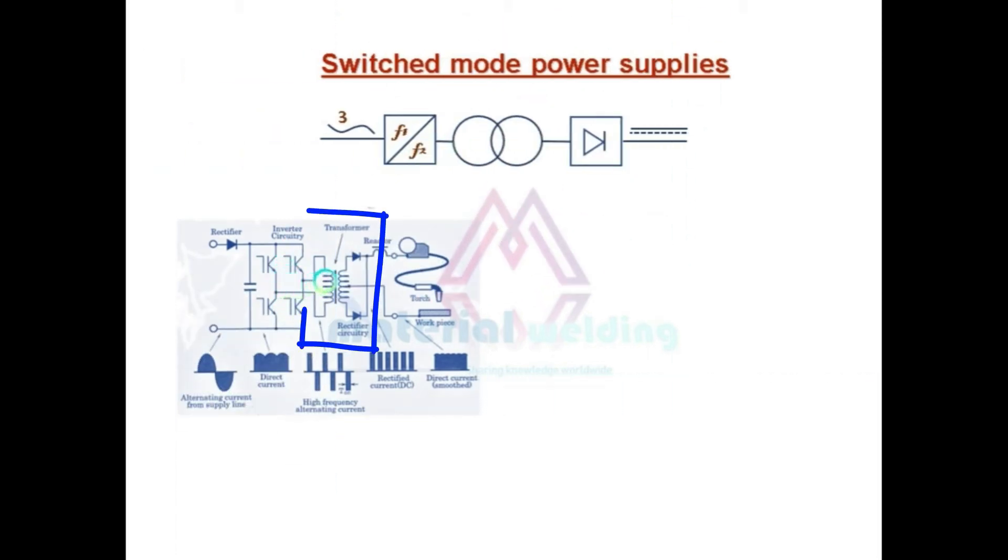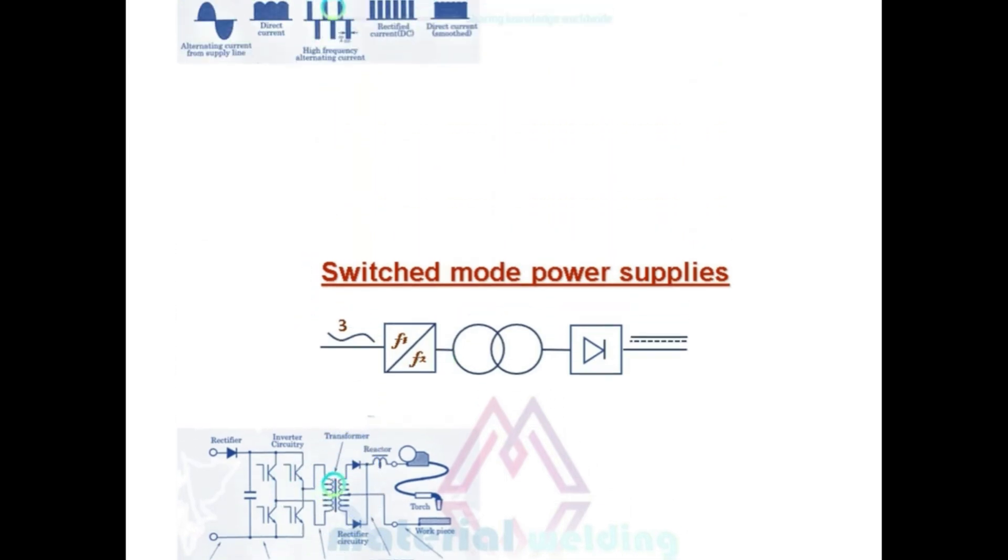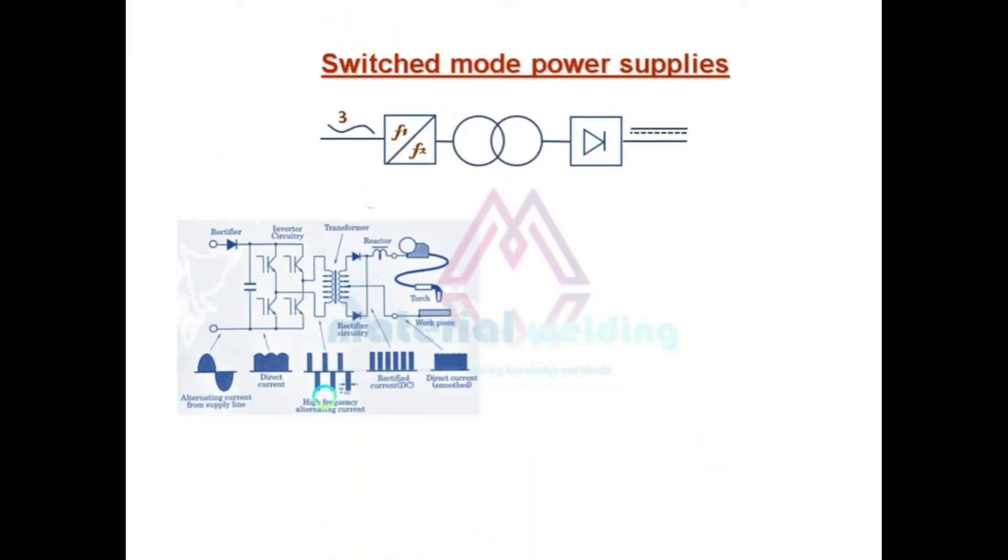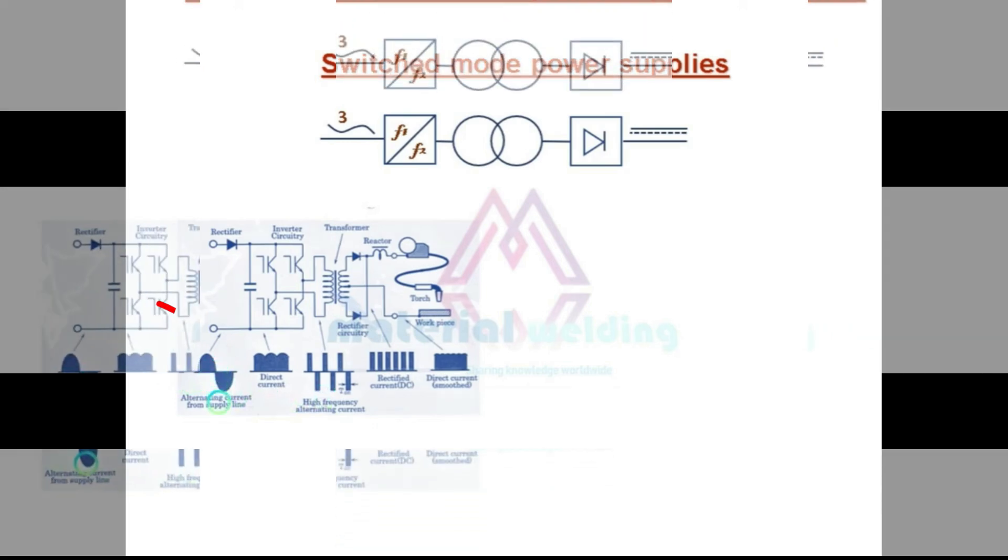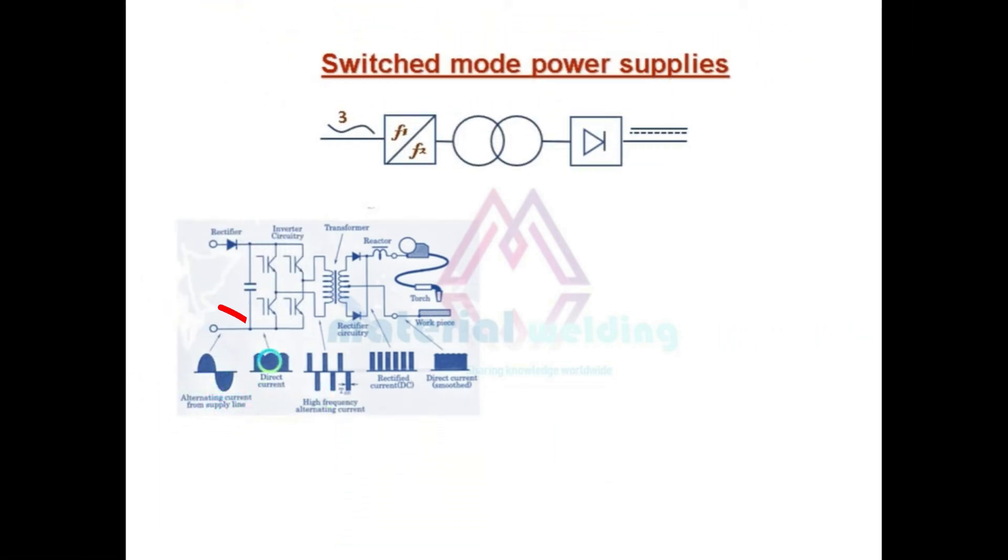This diode current is then converted again to high frequency alternating current. This device output current and voltage can be easily programmed through different waveforms. As we can see here, this is AC waveform, this is DC waveform, this is high frequency alternating current waveform, this is rectified DC, and this is rectified direct current which we normally get from a rectified device.